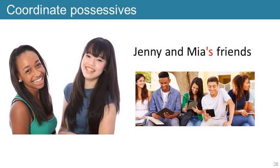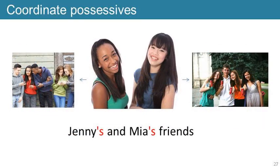A similar principle applies here. In the example 'Jenny and Mia's friends', it will most likely be understood that these are their shared friends. In the example 'Jenny's and Mia's friends', it will probably be understood that these are different friends. If you want to make this clear, you could just repeat the word 'friends' — for example, 'Jenny's friends and Mia's friends are coming to the party'.